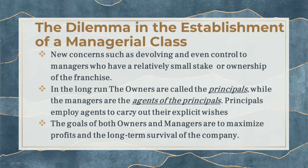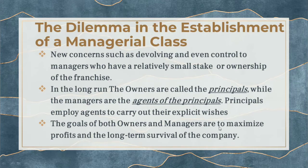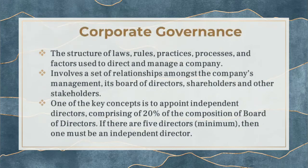Principals — the owners — employ agents, such as managers, who carry out their explicit wishes. For example, Danding Cojuangco is the principal of San Miguel Corporation, while Ramon Ang, the CEO, is the agent of the principal. This delegation happens because owners can no longer handle all operational pressure or prefer to delegate tasks. The goals of both owners and managers are to maximize profits and ensure the long-term survival of the company.